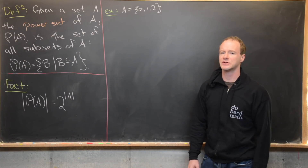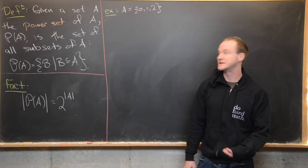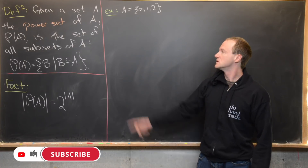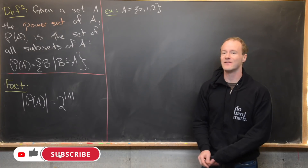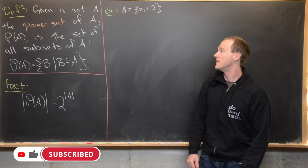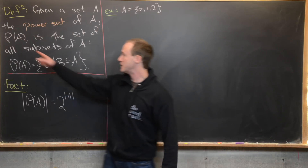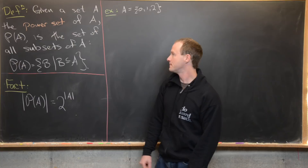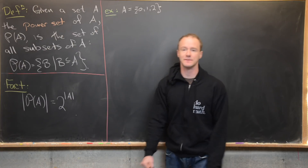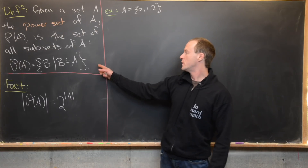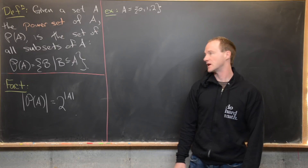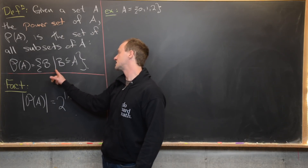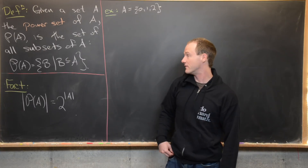Here we're going to look at a couple of very elementary notions from set theory. The first of which is the power set. So given any set A, the power set of A — which we denote by this calligraphic P of A — is the set of all subsets of A. We could write this in set builder notation: P of A equals the set of all B such that B is a subset of A.